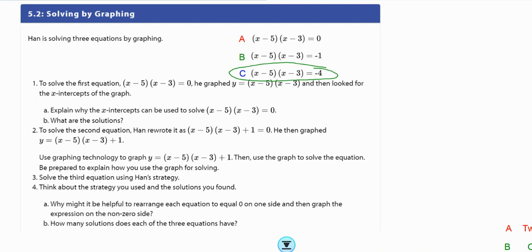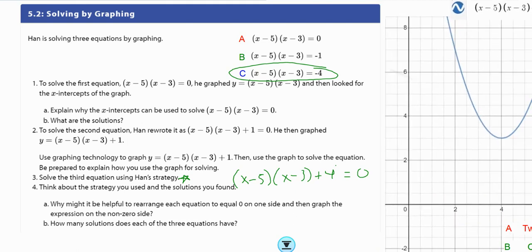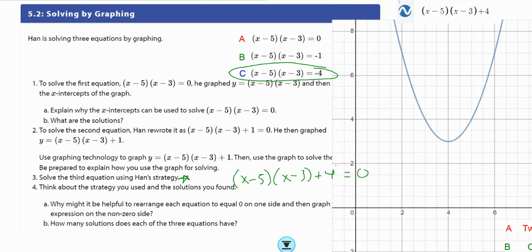So it says, solve the third equation using Han's strategy. So that means we're going to take this equation, (x - 5)(x - 3), and we're going to add 4 to both sides, because that's what Han did in the previous problem. And he set one side equal to 0. He moved that negative 4, so one side equals 0. Then he went and graphed that equation and found when is it going to equal 0? This is my equation. So I'm looking here, because here y is 6, here y is 4, here y is 2, and here is where y equals 0. Is there any graph that crosses? There is no graph there. So I don't see any solutions. It never touches. It's never going to equal 0.